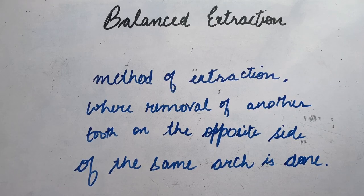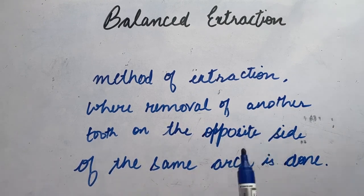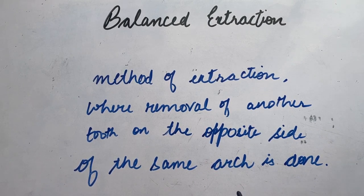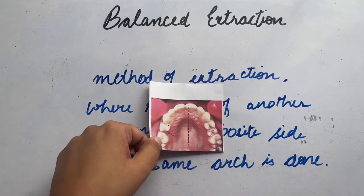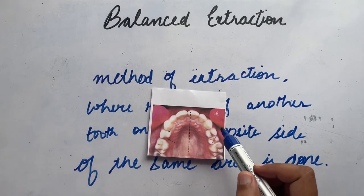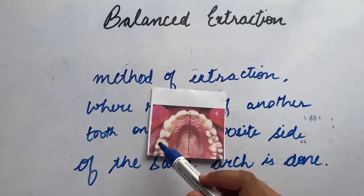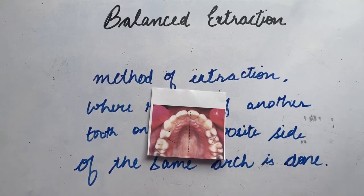By definition, balanced extraction is defined as the method of extraction where removal of another tooth on the opposite side of the same arch is done. As we discussed in the previous case, we have the same maxillary arch — one side extraction — and to balance it, we need to do another tooth extraction on the opposite side of the same arch.